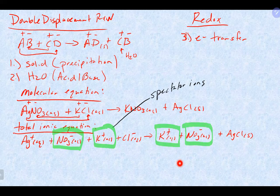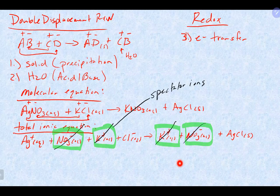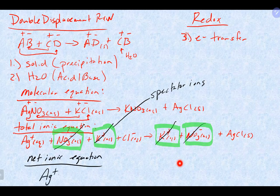The spectator ions cancel out on both sides, leaving us our third type of equation: the net ionic equation. In this reaction, what is happening is the silver ion finds the chloride ion and they make silver chloride.